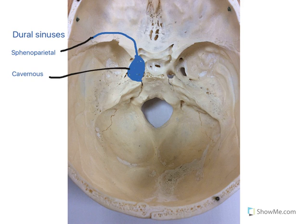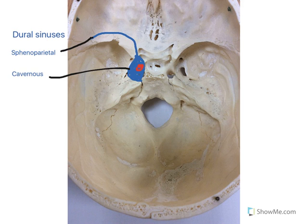The cavernous sinus sits either side of the sella turcica and receives venous blood from the sphenoparietal sinus, as well as the ophthalmic veins and the superficial middle cerebral veins. The cavernous sinus is not just filled with venous blood — it also has structures running through it, including the internal carotid artery, the oculomotor nerve, trochlear nerve, abducens nerve, and parts of the trigeminal nerve.